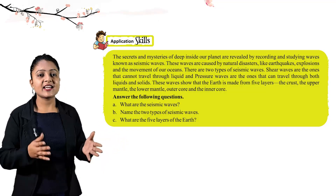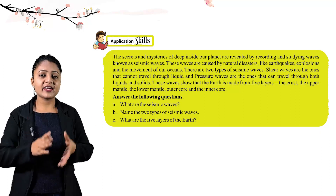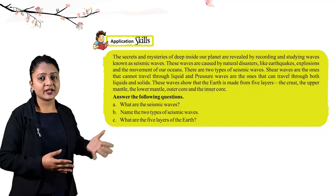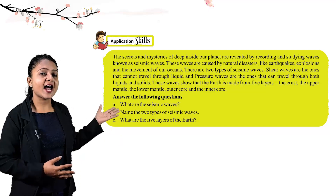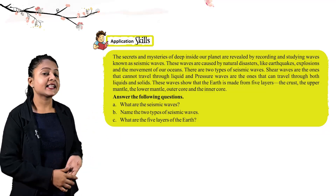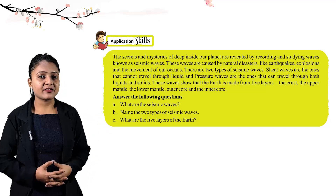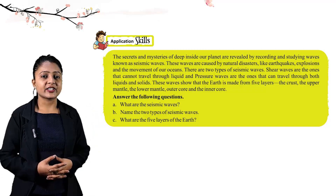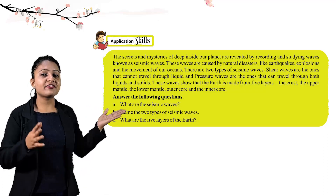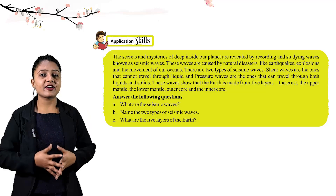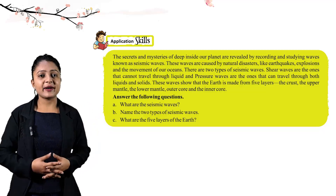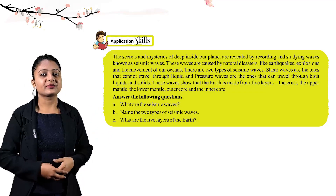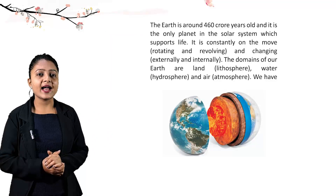These waves show that the earth is made of five layers: the crust, the upper mantle, the lower mantle, the outer core, and the inner core. Seismic waves are the waves occurring inside the earth in the form of earthquakes, explosions, and movement of oceans. The two types are shear waves and pressure waves.